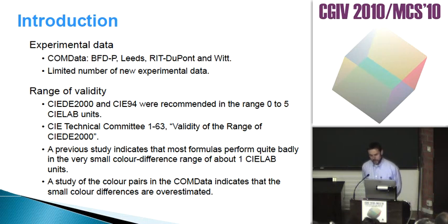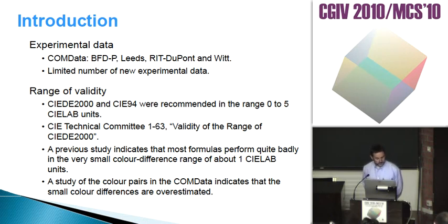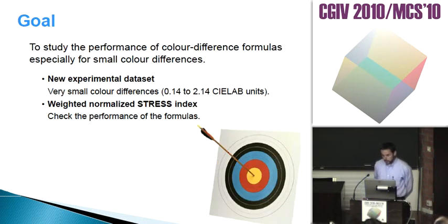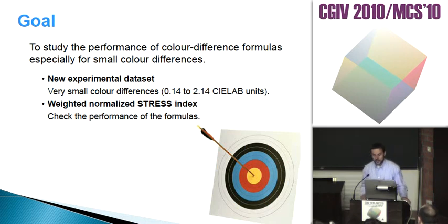We can also consider the range of validity of the formulas. There is another technical committee, CIE TC163, studying the validity range of Delta E 2000. Delta E 2000 and CIE94 were recommended in the range from 0 to 5 CIELAB units. Previous studies indicate that most formulas perform quite badly in the very small color difference range of about one CIELAB unit, and that small color differences in the COMB data set are overestimated. Therefore, it is important to study the performance of color difference formulas especially for small color differences.